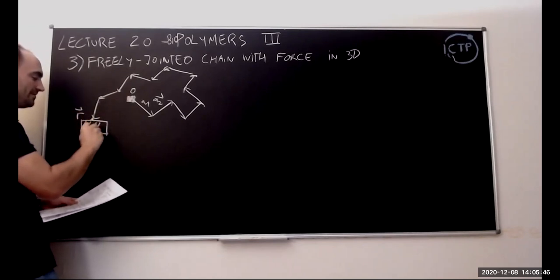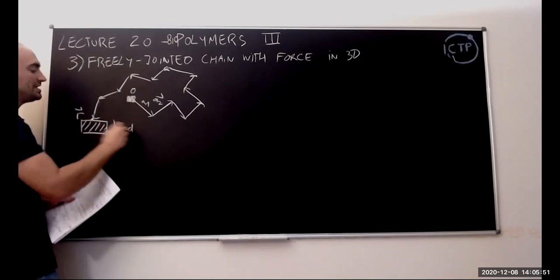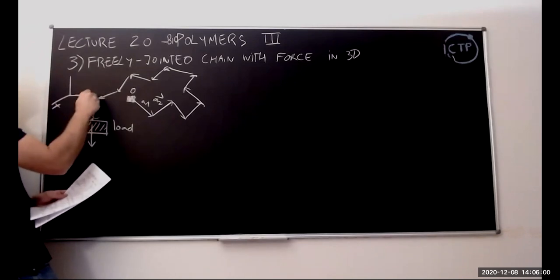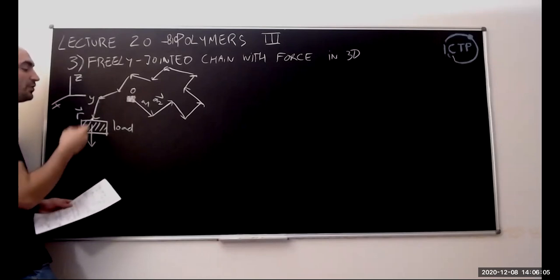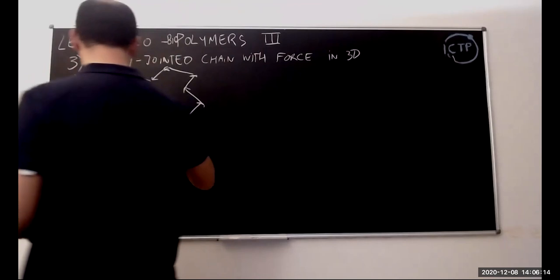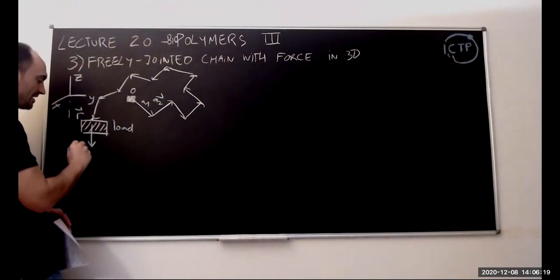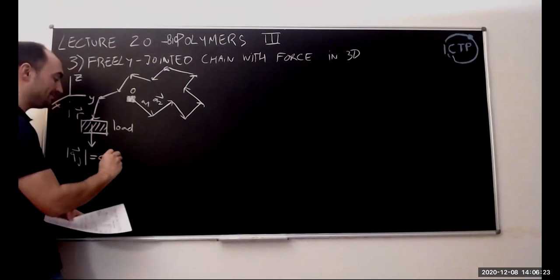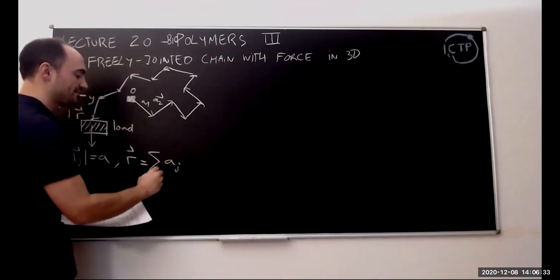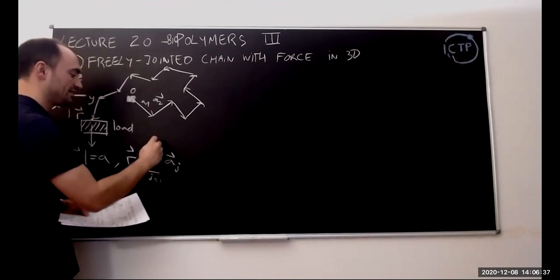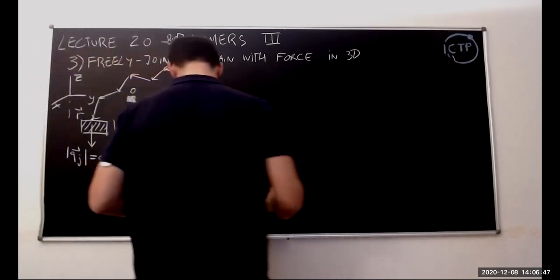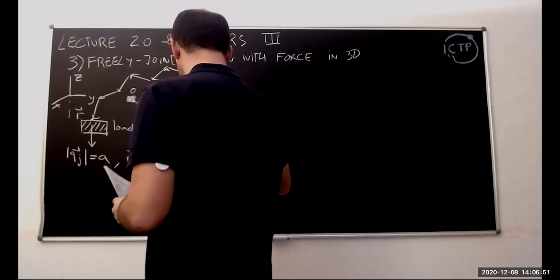On top of that, we say there is a load on the polymer — we apply an external force. The force is pointing in the z direction, so x, y, z are defined accordingly. Something to remember: all vectors a_j have modulus a. The endpoint of the polymer results from summing all vectors a_j for j equals one to n. Also, a_i and a_j are independent when i is different from j.